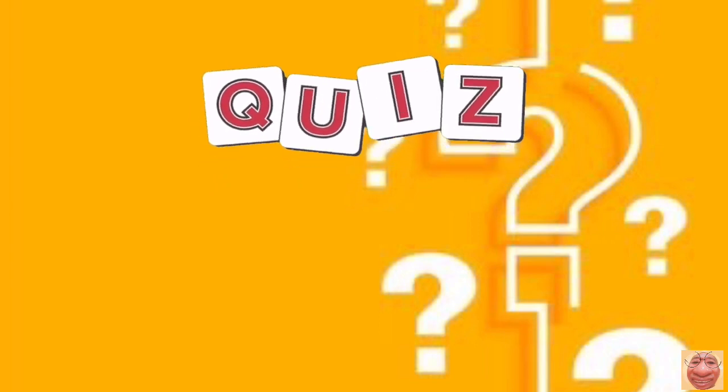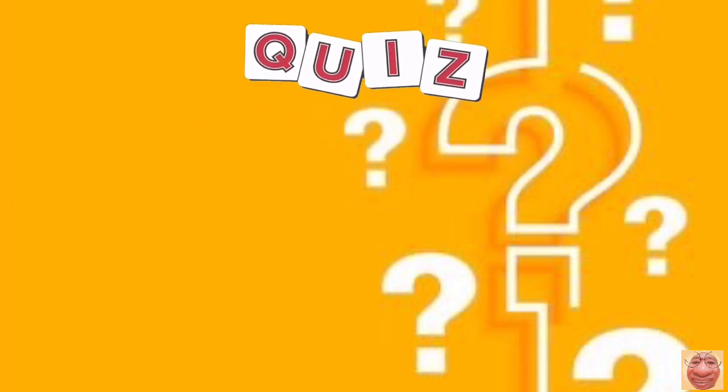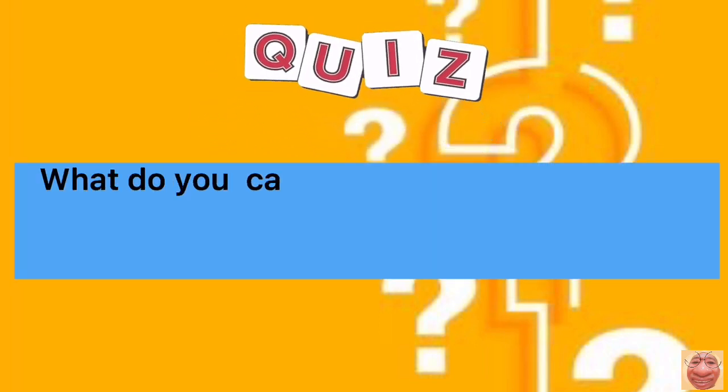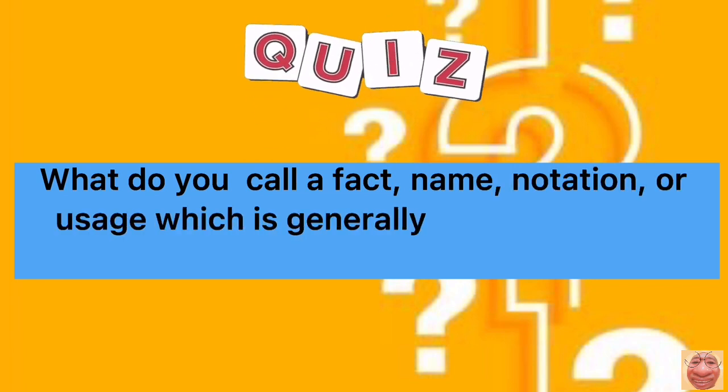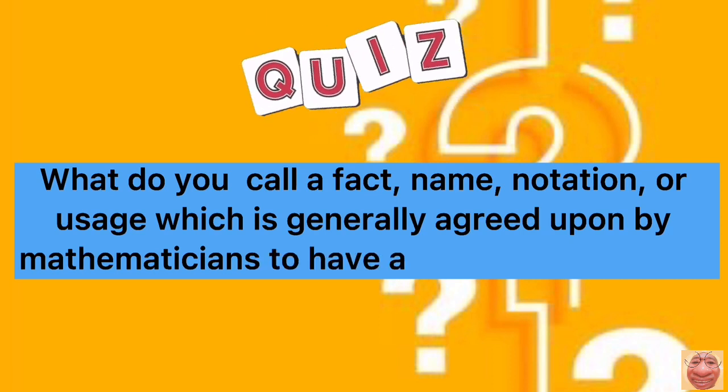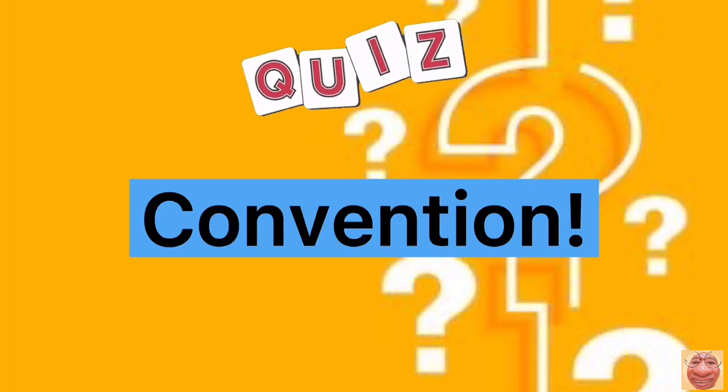Answer these questions. First, what do you call a fact, name, notation, or usage, which is generally agreed upon by mathematicians to have a particular meaning? That's right, conventions.